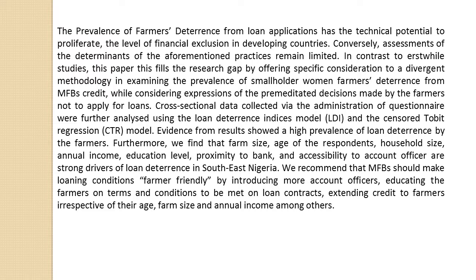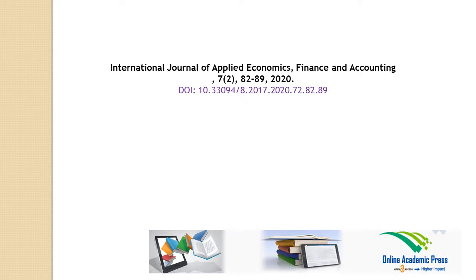We recommend that MFBs should make loaning conditions farmer-friendly by introducing more account officers, educating the farmers on terms and conditions to be met on loan contracts, and extending credit to farmers irrespective of their age, farm size and annual income, among others. Thanks for watching this abstract video of International Journal of Applied Economics, Finance and Accounting, Volume 7, Number 2, pages 82 to 89, published by Online Academic Press.